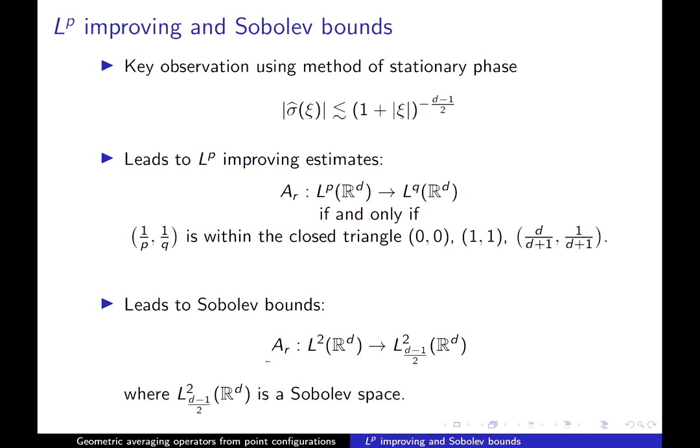One can also see this through Sobolev bounds just from the decay of the symbol here. If you were to take derivatives of this operator, then on the Fourier side, they really are just multiplication by xi. And you can see that you can sort of roughly cancel things out. So it's very natural that it maps L2 into L2 with d minus 1 over 2 derivatives. These results are classic results attributed to Littman and Strichartz.